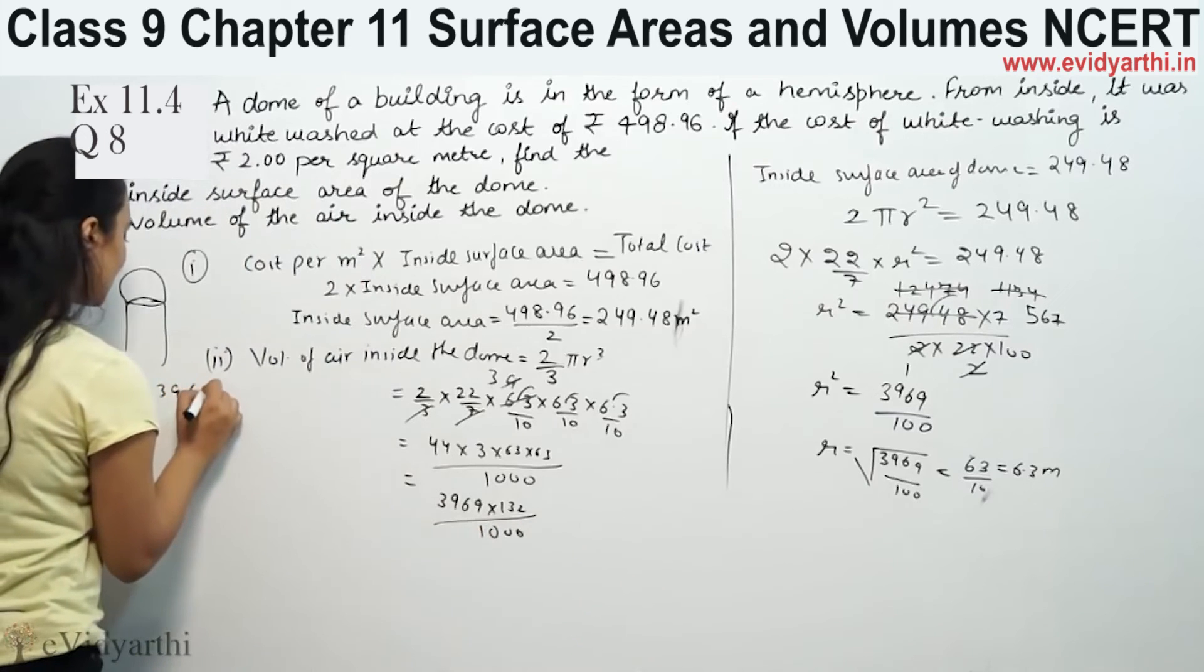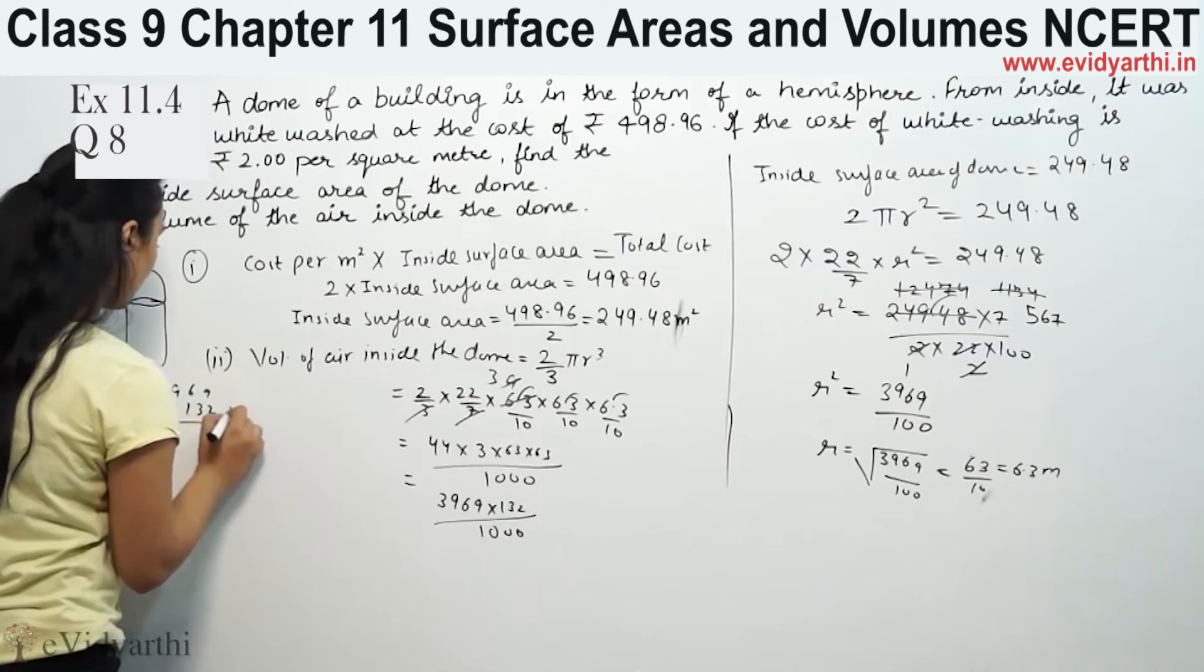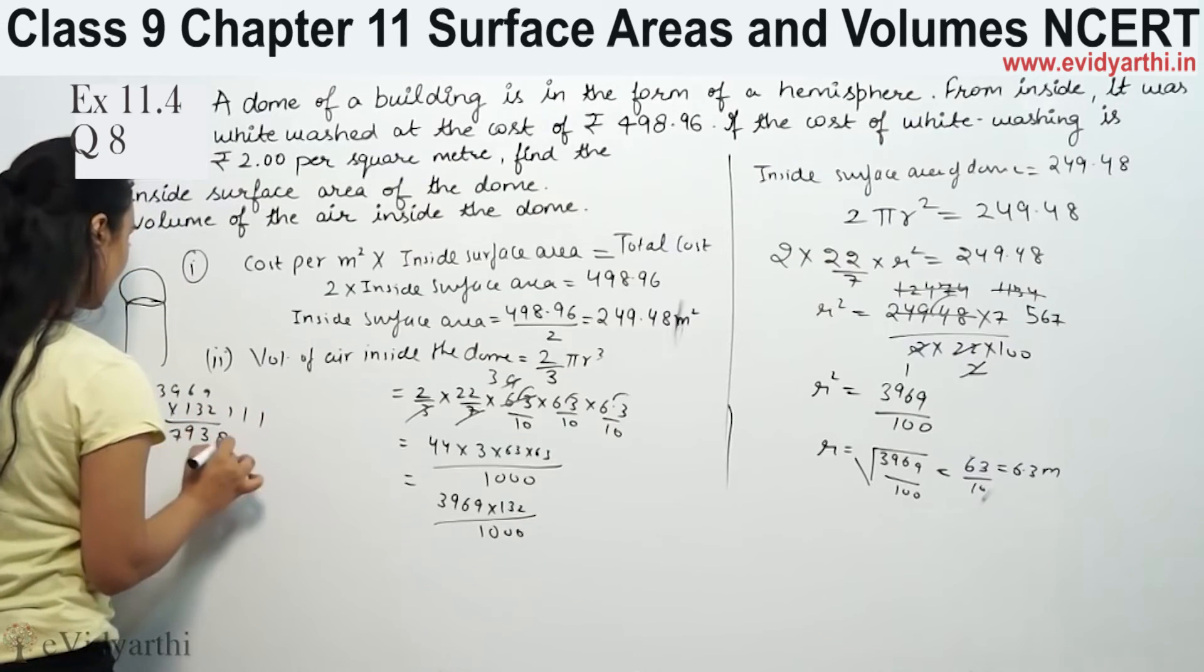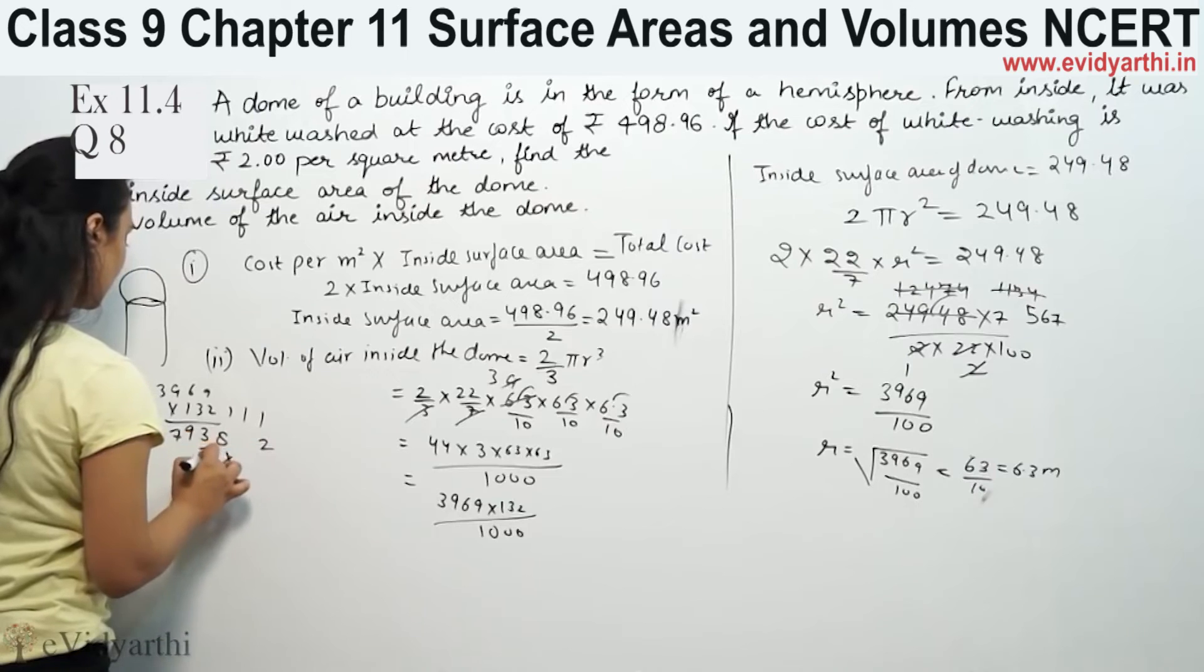63 × 63 is 3969. 44 × 3 is 132 divided by 1000. So 3969 × 132.